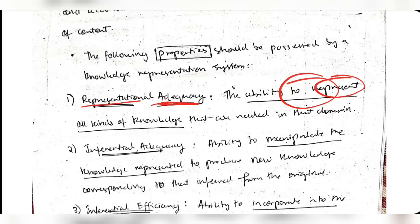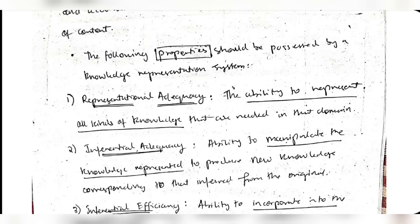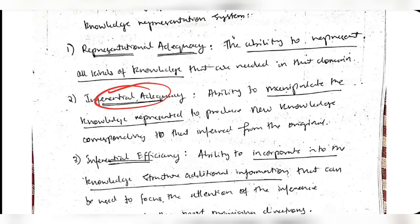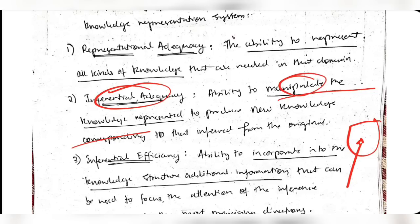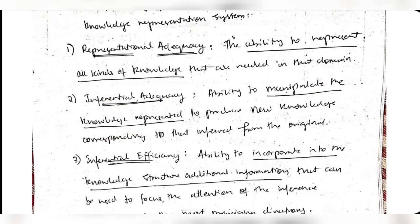Representational adequacy means the system should be able to represent all kinds of knowledge needed in that domain. If you are working in machine learning and don't represent certain information, the machine will give wrong output. The second property is inferential adequacy - the ability to manipulate knowledge represented. If you included false information, you need to be able to eliminate it from the system.